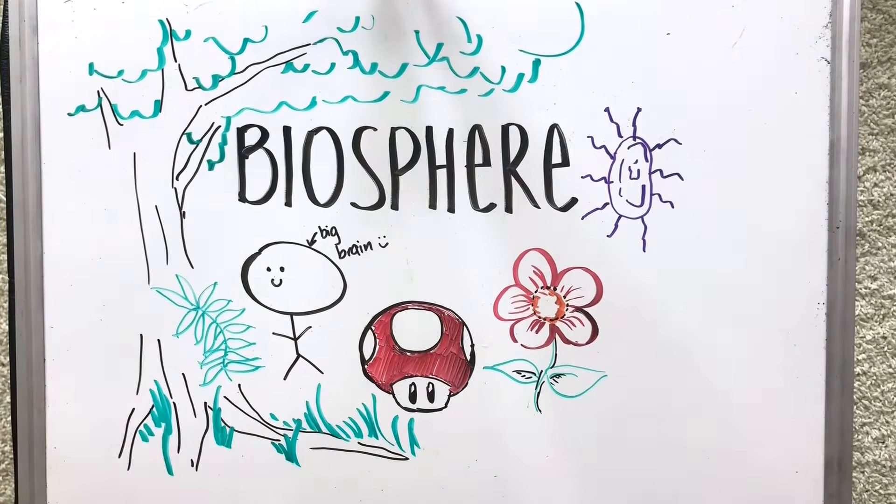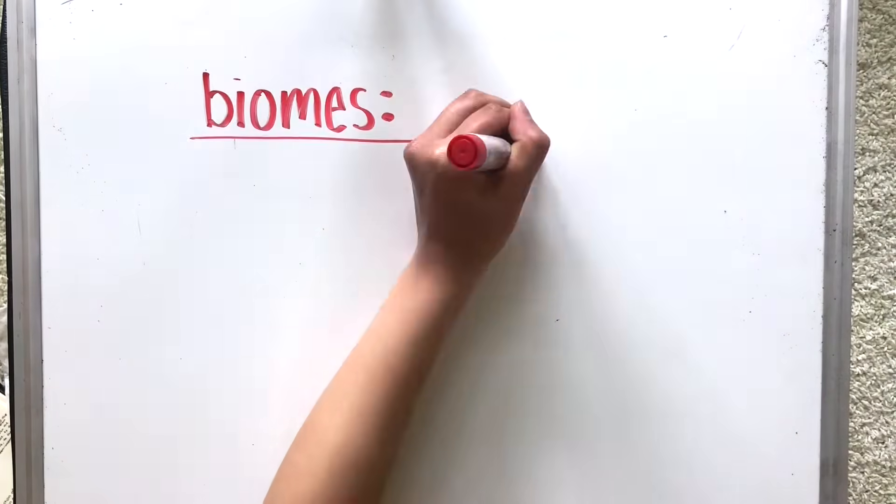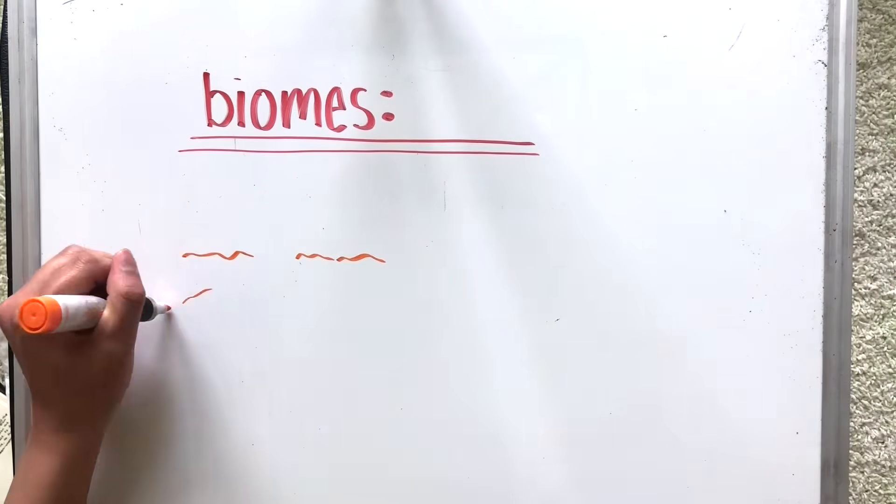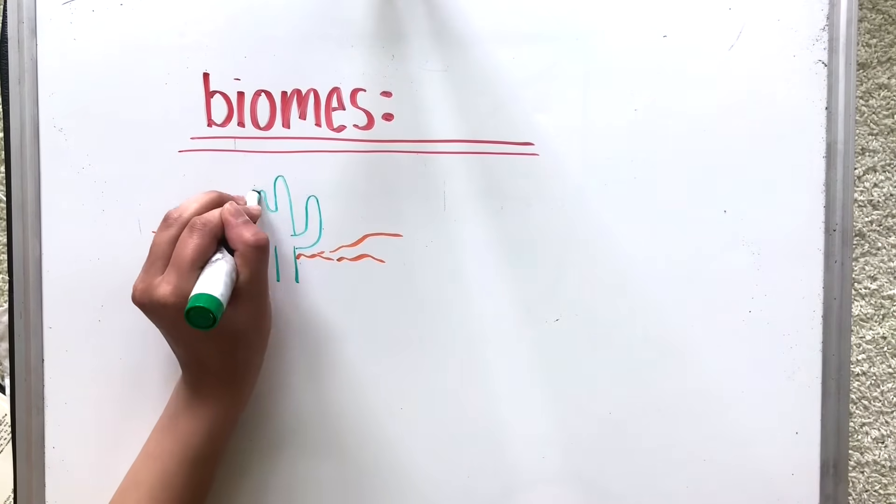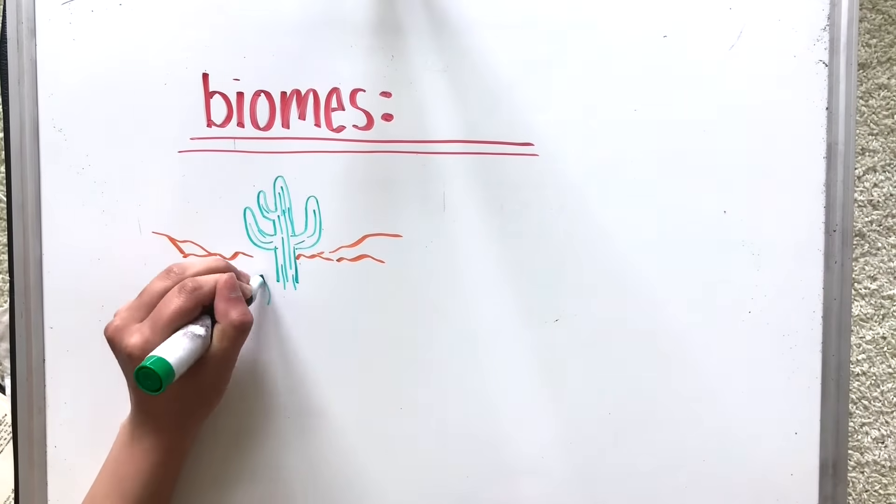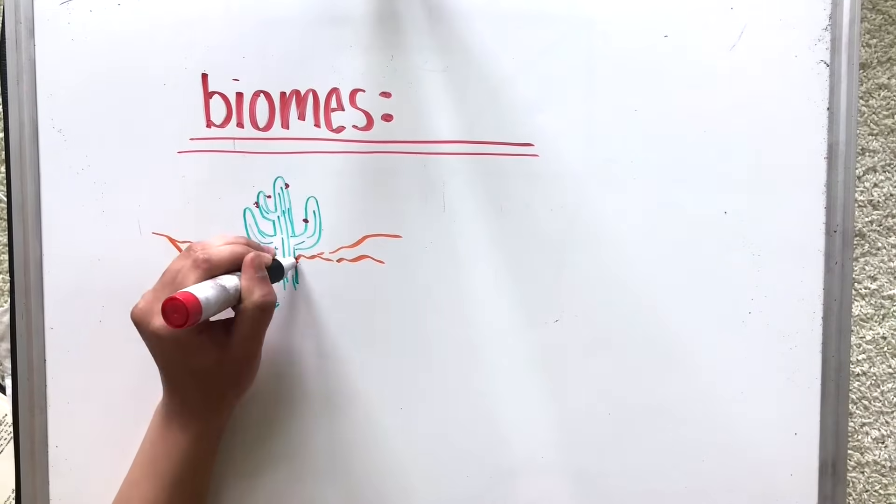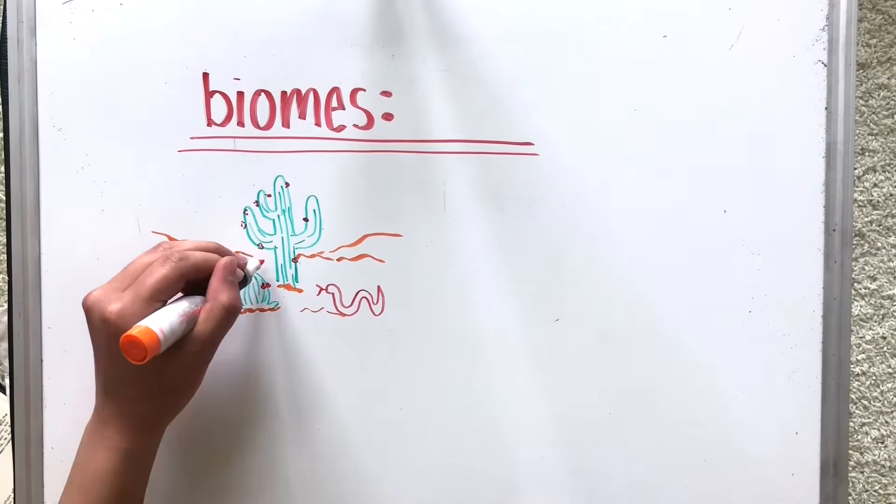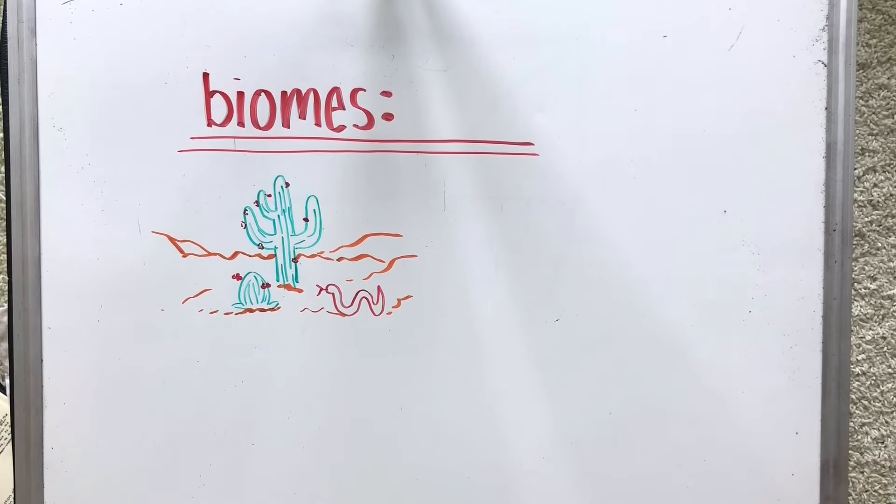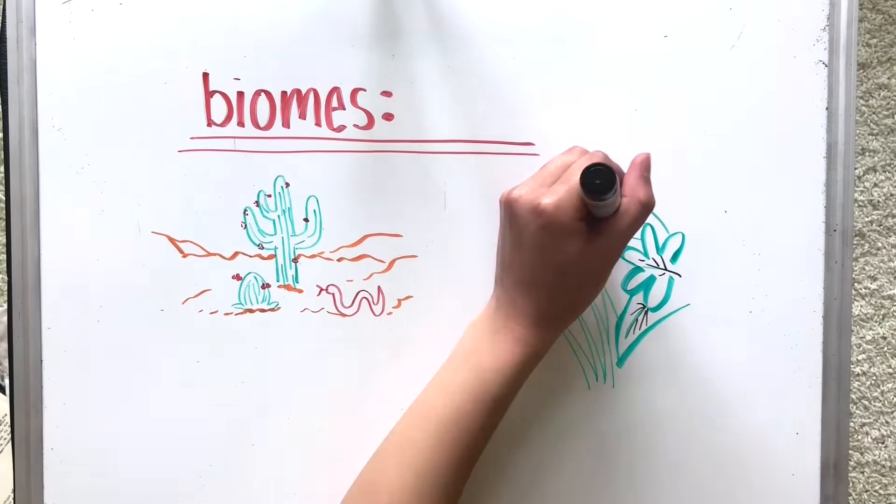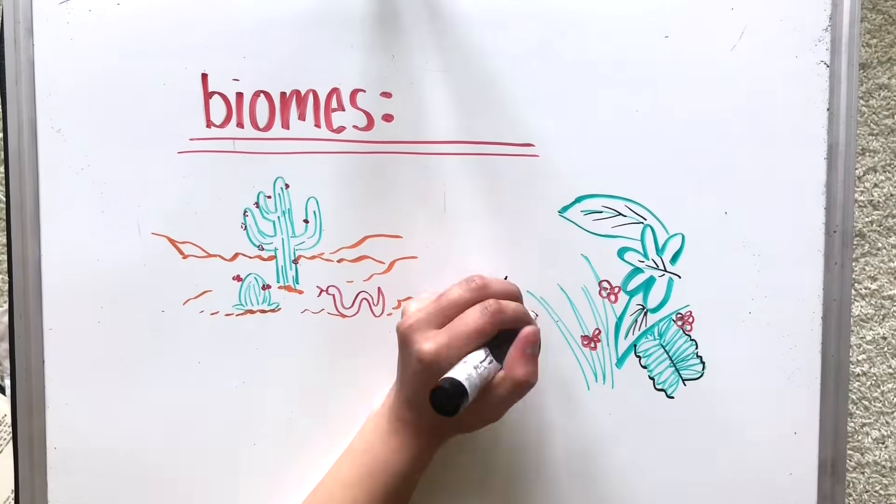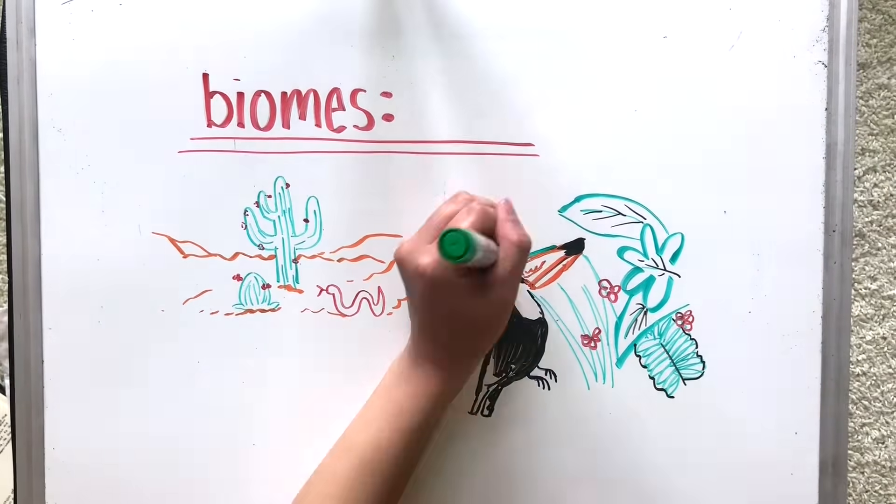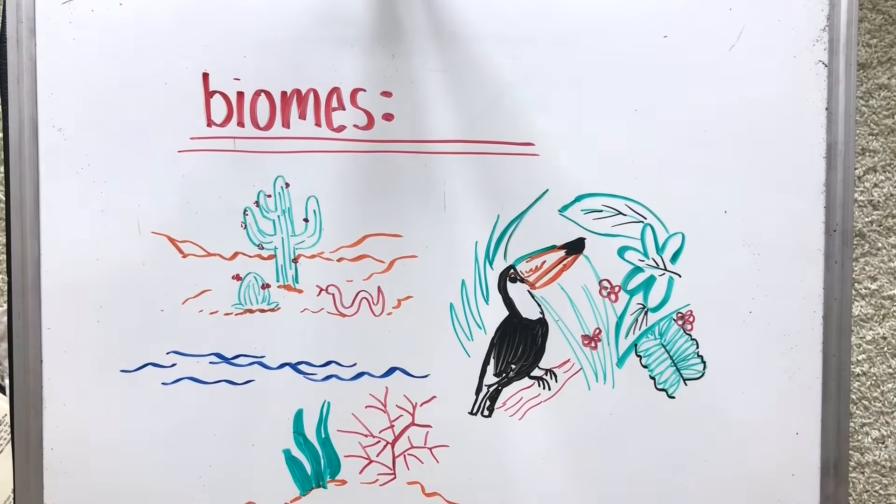Our biosphere can be divided into ecological communities, or major life zones, known as biomes. These are grouped according to the physical characteristics of the environment. These biomes include our desert biome, with our cactus, our sand, and our lovely snake over there. Our tropical rainforest, complete with tropical plants and animals. Savannah biomes, freshwater biomes, marine biomes, there are so many out there.